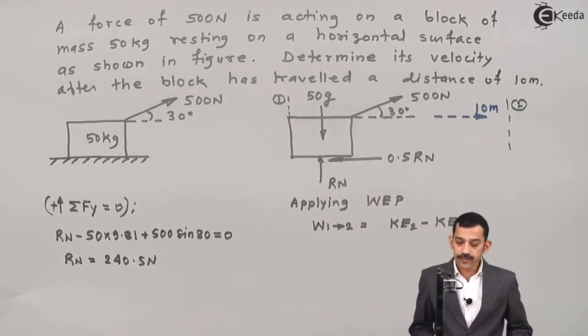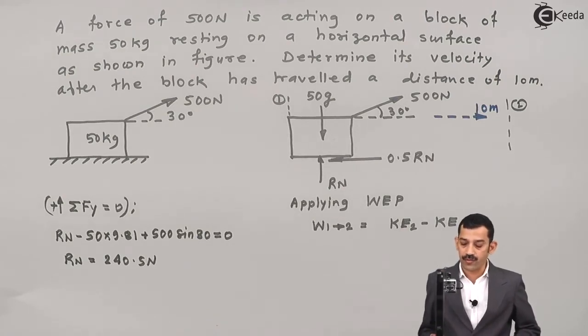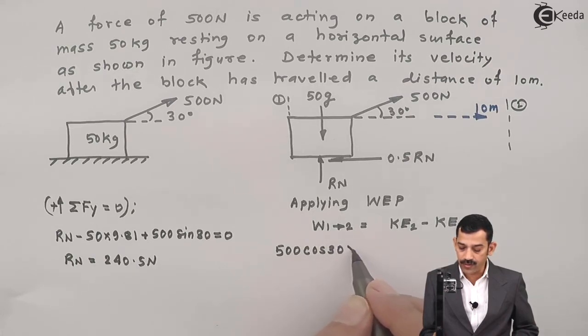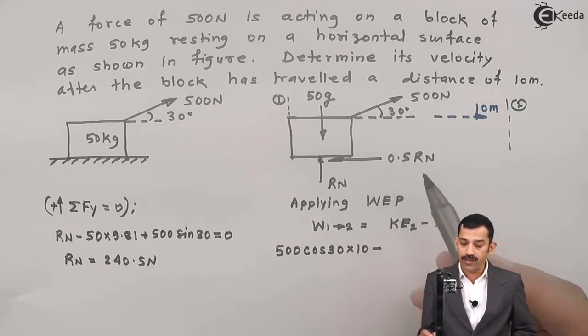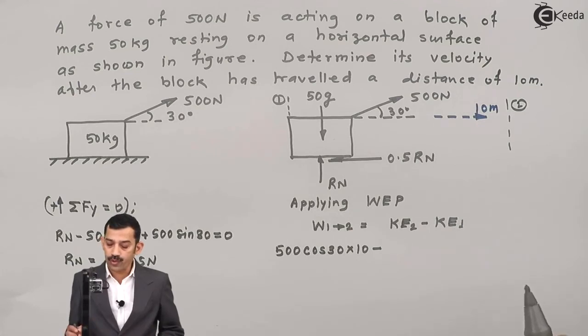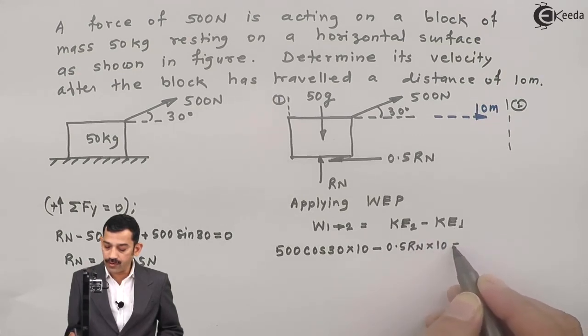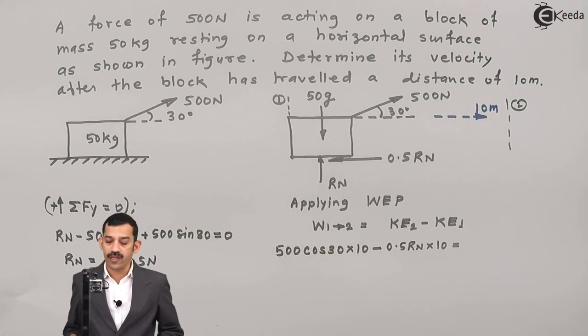Work done by forces: which forces act in direction of motion? First, 500 cos 30 acts in the rightward direction, motion is also in the rightward direction, therefore work done by 500 cos 30 is positive. So 500 cos 30 into 10 meters. Minus, why negative? Because frictional force acts in leftward direction, motion is in rightward direction. Therefore 0.5 into RN, again displacement is 10. That means work done by these two forces.